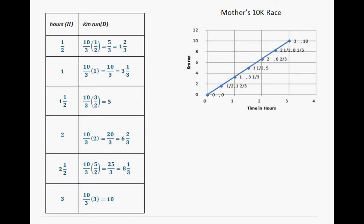Okay, so this is what you should have. For a half an hour, she would run 1 and 2/3 kilometers. For one hour, she would run 3 and 1/3 kilometers. For one and a half hours, 5 kilometers. Two hours would be 6 and 2/3. Two and a half hours would be 8 and 1/3 kilometers. And three hours would be 10 kilometers.